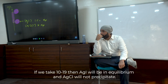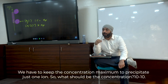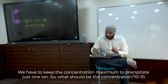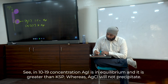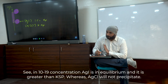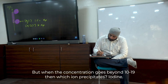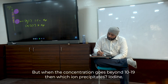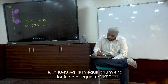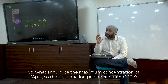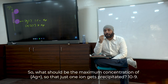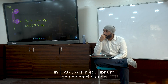We need to find the maximum concentration of Ag⁺ so that only one ion precipitates. At 10⁻¹⁹, only I⁻ precipitates as AgI, and the ionic product of AgCl is still less than Ksp(AgCl). So the maximum Ag⁺ concentration to selectively precipitate only I⁻ is 10⁻¹⁹. As Ag⁺ increases from 10⁻¹⁹ toward 10⁻⁹, I⁻ continues to precipitate.